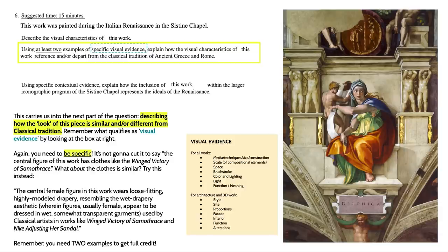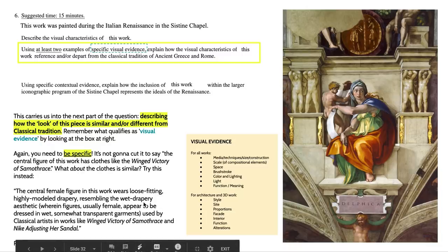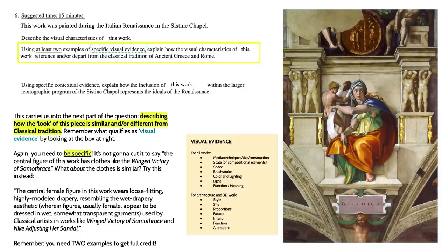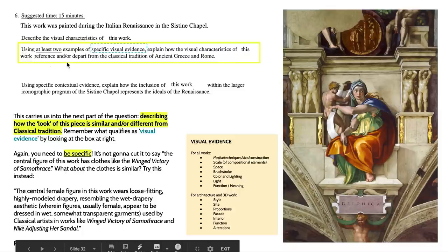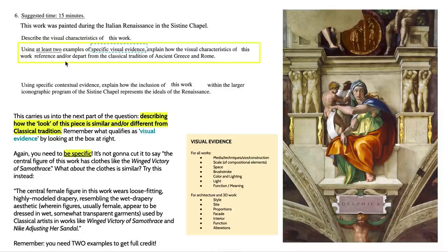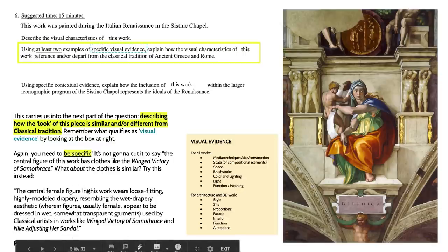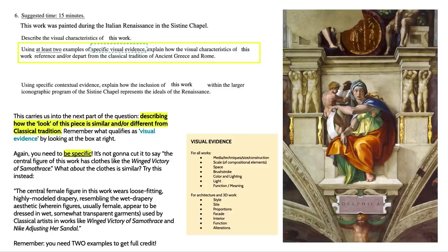You need to describe what about the clothing is similar. You might not even necessarily come up with the term 'wet drapery,' but if you describe this concept of these wet, somewhat transparent garments, you will probably get those points. Remember that you need two examples to get full credit, as indicated in the question, and they need to specifically reference and/or depart from the classical tradition of ancient Greece and Rome. This example I provided is referencing a continuity between this work and ancient Greece and Rome.